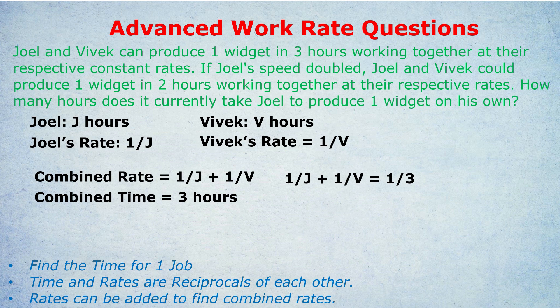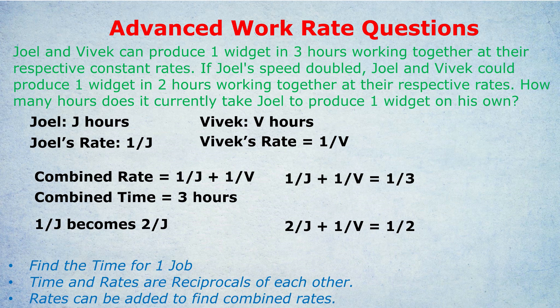If Joel's speed is doubled, what does 1/j become? If we're doubling his rate, it becomes 2/j. You might think it's 1/(2j) — but that actually halves the rate. Since 1/j is his rate, multiplying that fraction by two gives 2/j, which is Joel's new doubled rate. So Joel's new rate 2/j plus Vivek's rate 1/v equals their new combined rate of 1/2. That's our second equation.